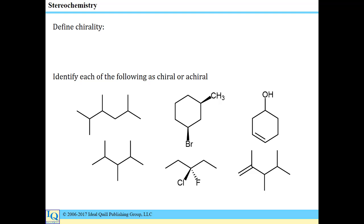Our first problem is to define chirality. Chirality is simply the term we use for handedness when it applies to molecules. If a molecule lacks symmetry, it is going to be a chiral compound.